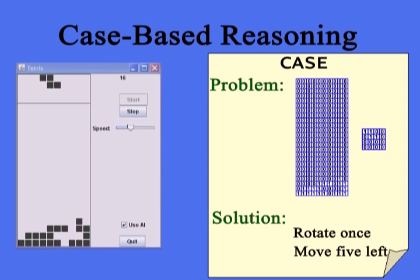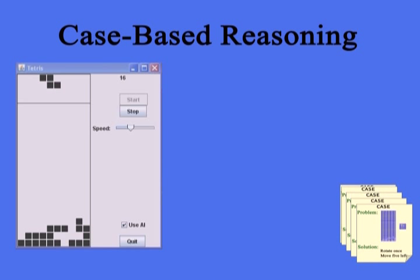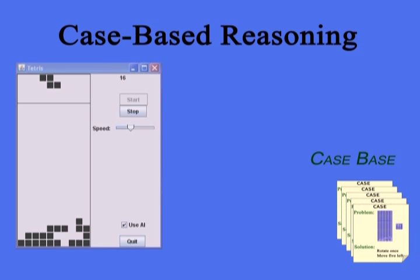Together, these problem-solution pairs are called cases and can be automatically generated by observing how the expert behaves in response to each encountered problem. After collecting a number of cases, called a case base, the agent can then play Tetris by itself. When it encounters an input problem, it can search the case base for a similar case and reuse the solution from that case.